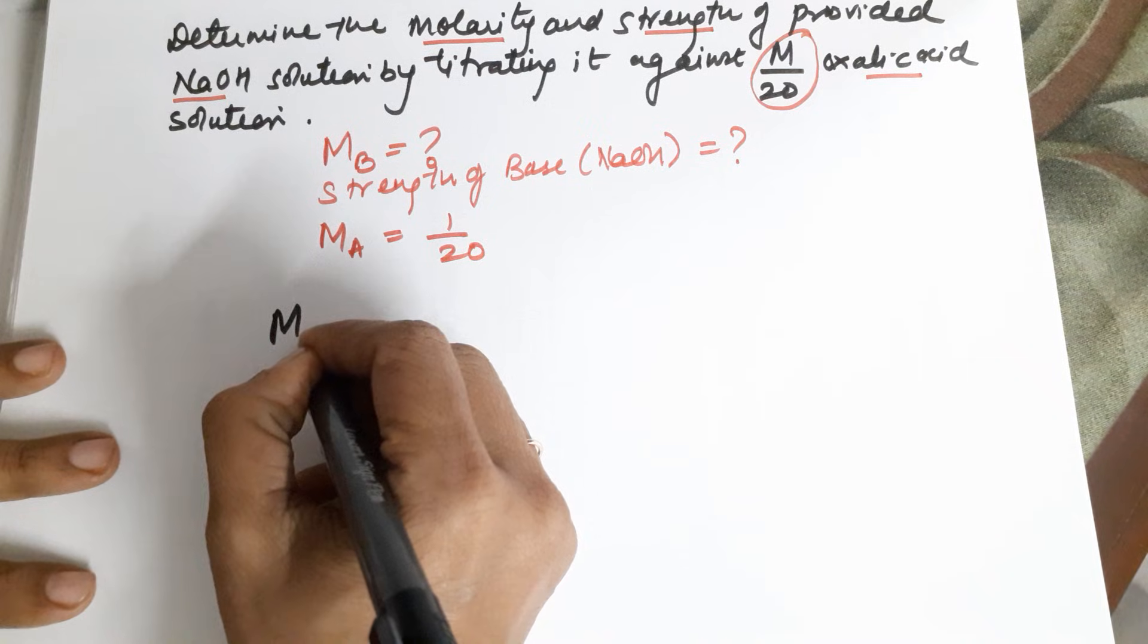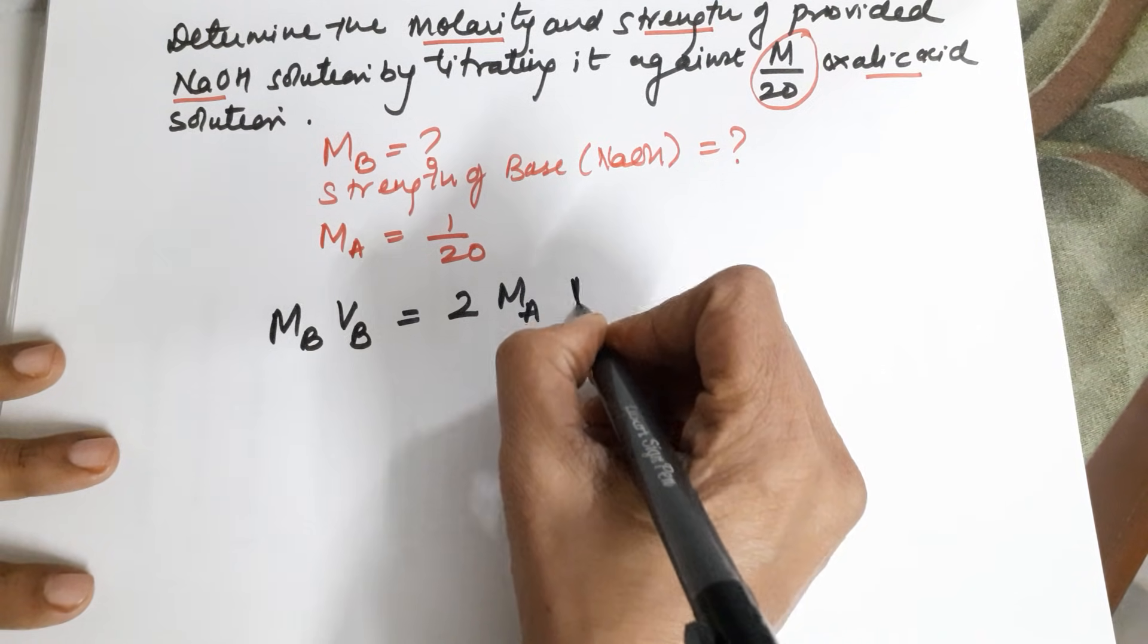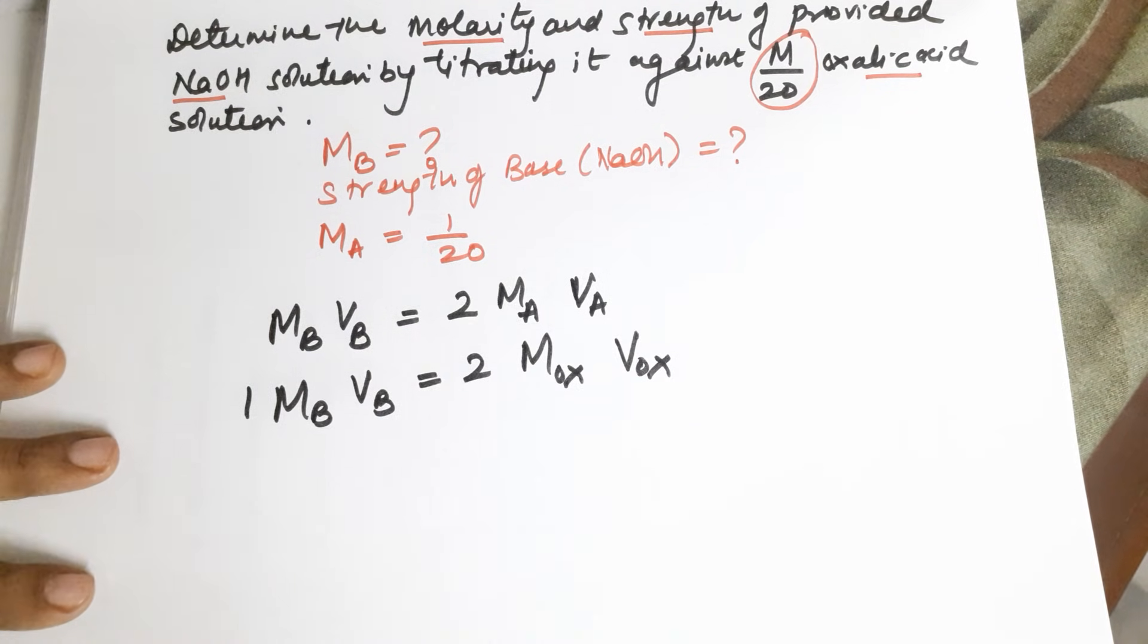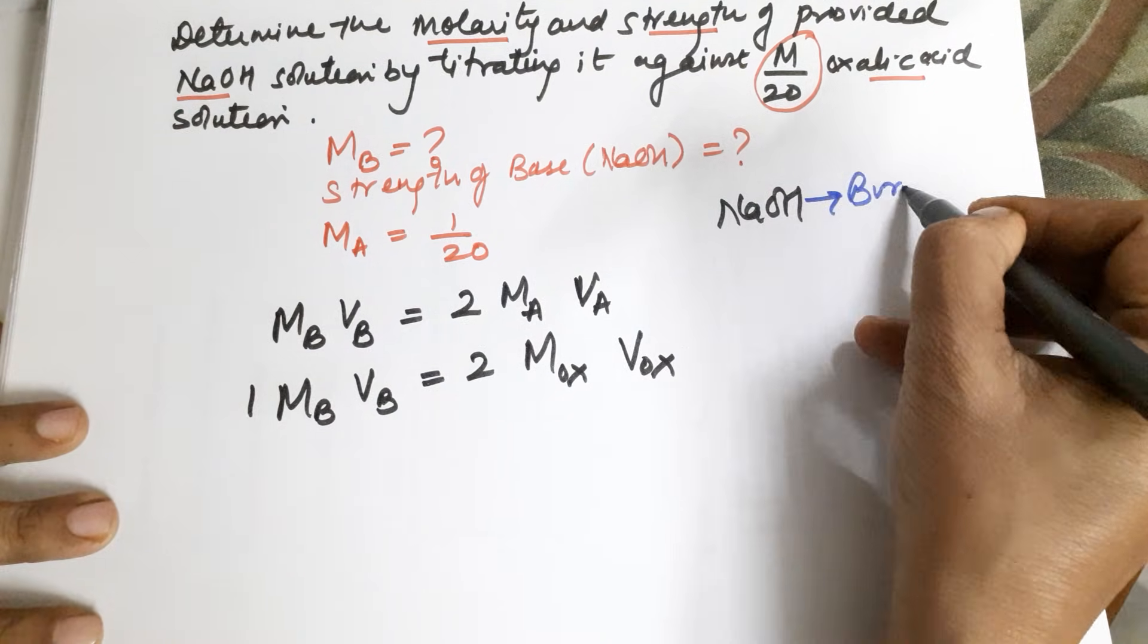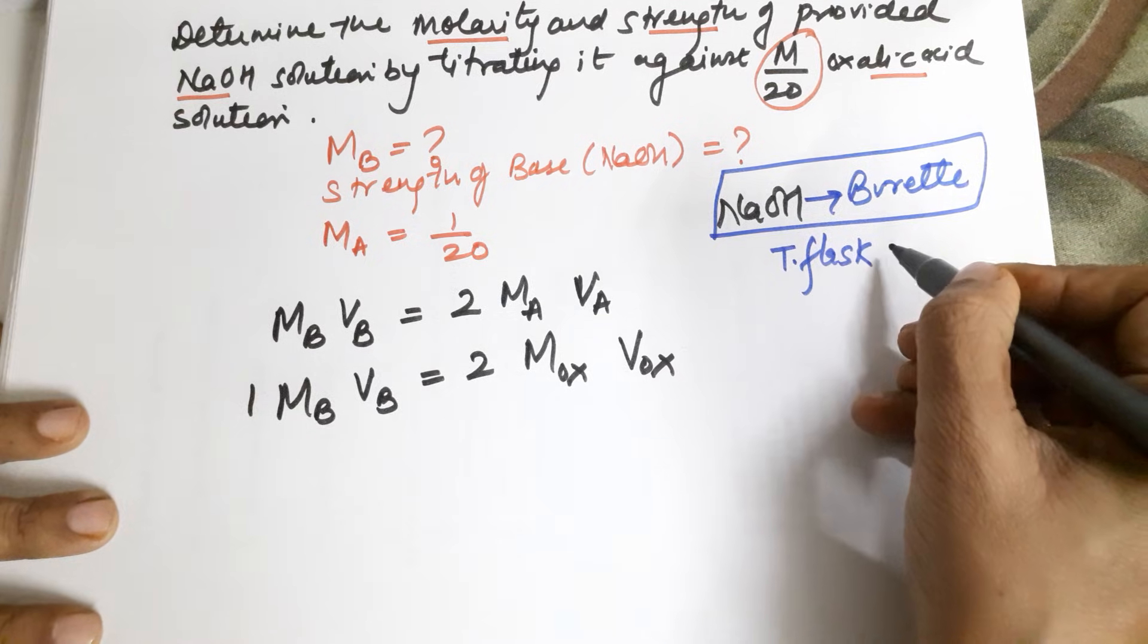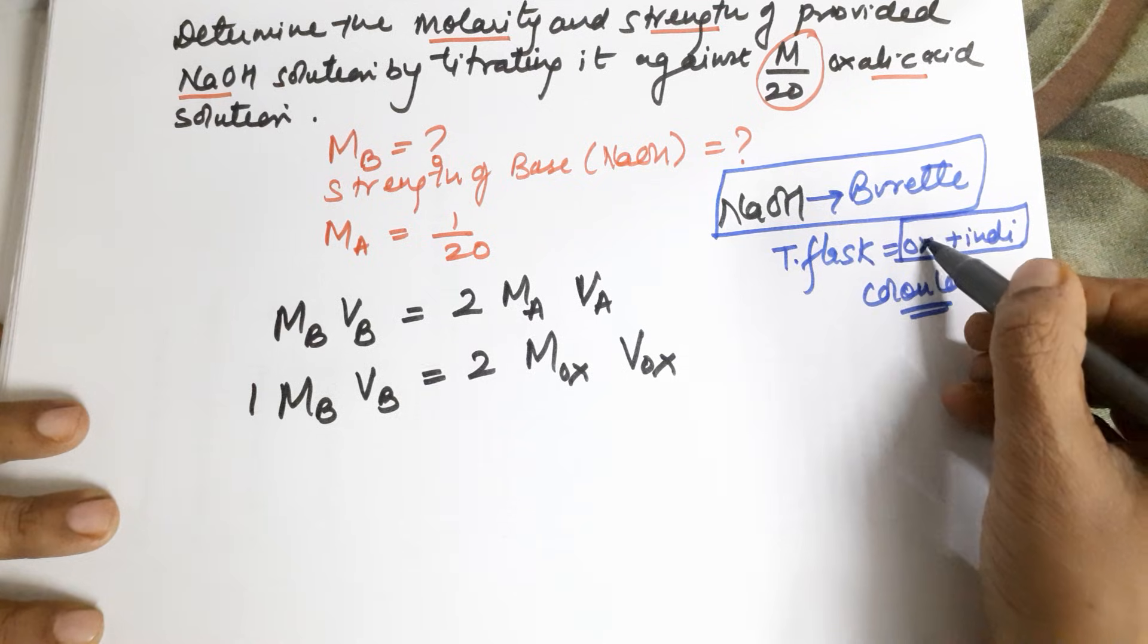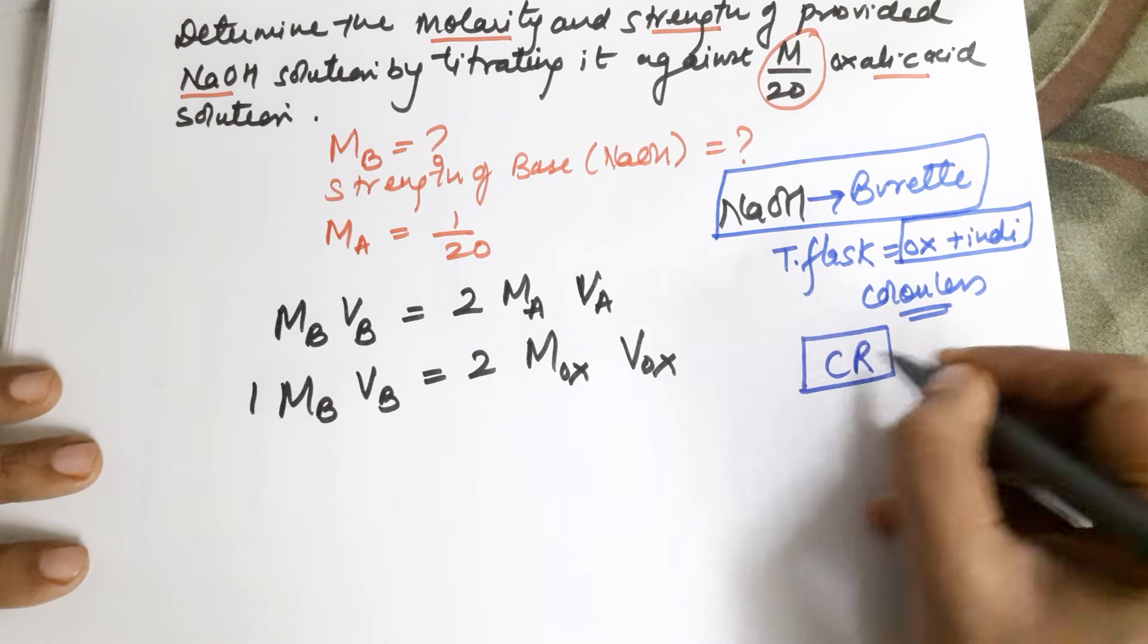So substituting the formula: molarity of the base times volume of the base is equal to 2 times molarity of the acid times volume of the acid. I am using a titration where NaOH is taken in the burette, which means your titration flask after adding the indicator and the acid has oxalic plus the indicator. After adding indicator phenolphthalein, it would remain colorless because the indicator phenolphthalein in acidic medium remains colorless.